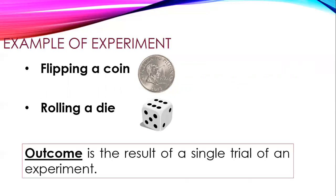Outcome is the result of a single trial of an experiment. We call outcome the result of a single trial of the experiment. Let's determine what are the possible outcomes when we flip a coin.